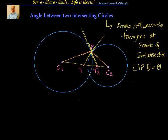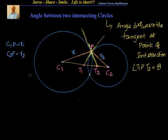We have to find out what is the angle theta. For that, what is the known information? We know that C1P is equal to R1, and C2P is equal to R2. We also know the distance between the centers: C1C2 is equal to D. Now, if you look at the triangle C1PC2, we have all three sides' information.